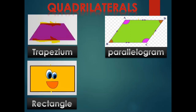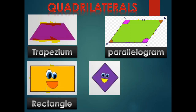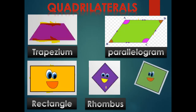Another one — what is this? A rectangle. In a rectangle, each two opposite sides are parallel and equal in length. This side and this side are parallel and equal in length, and this side and this side are also parallel and equal in length. Another one — rhombus. In a rhombus, all sides are equal in length.